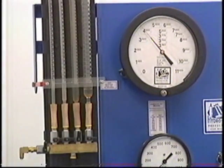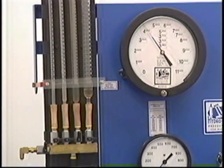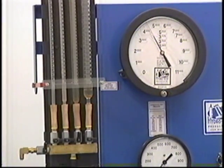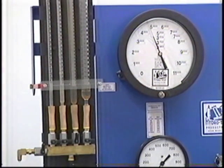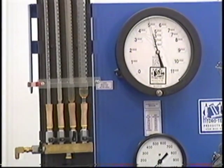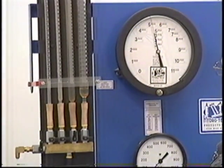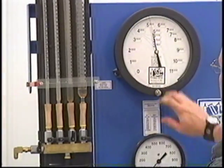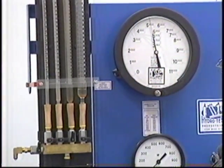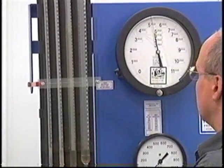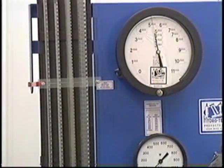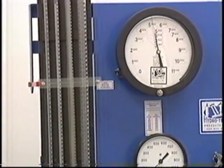I will then bring it all the way up to 5000 psi. Again tap the gauge. You are required to hold the pressure for 30 seconds, that is why we have a clock.